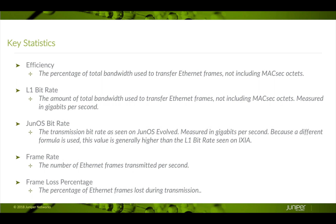When calculating the Layer 1 bit rate, we consider the Ethernet preamble, the Ethernet frame, and the inner packet gap, but not the MaxSec header. The transmission bit rate as seen in JunOS is called the JunOS bit rate. It is different than the Layer 1 bit rate — it measures the amount of bandwidth used to transmit the Ethernet frame and the MaxSec header, but does not include the Ethernet preamble nor the inner packet gap. The frame rate is the number of Ethernet frames transmitted per second, and the frame loss percentage is the percentage of Ethernet frames lost crossing the MaxSec link. If we are sending at 400G line rate, the frame loss should always be 0%.